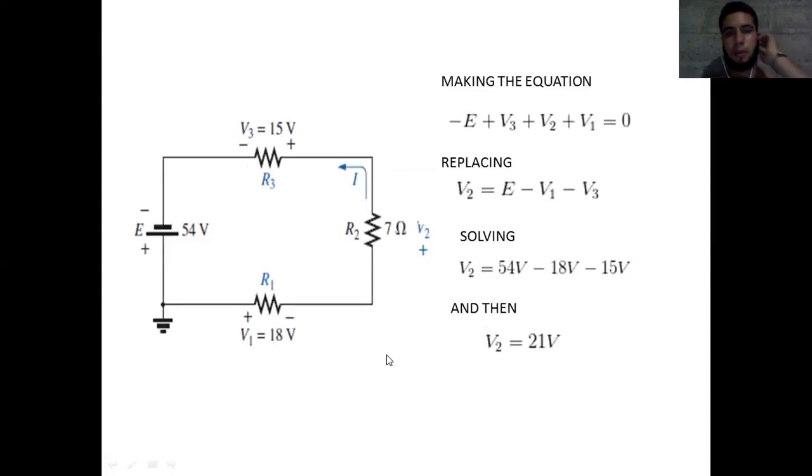Here we have one circuit with a source of voltage and three resistors: R1, R2, and R3. Each component has a voltage across it. We can see that the source voltage is 54 volts.